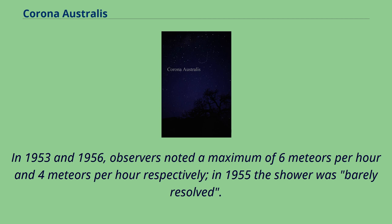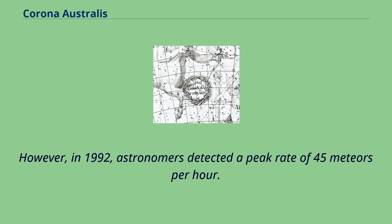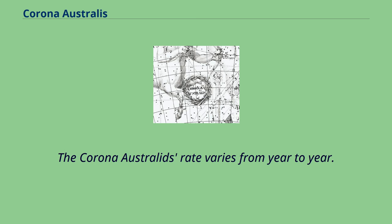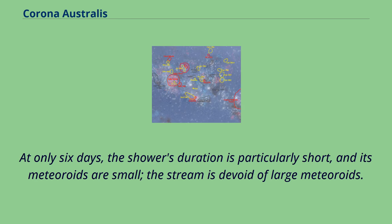In 1955 the shower was barely resolved. However, in 1992, astronomers detected a peak rate of 45 meteors per hour. The Corona Australids rate varies from year to year. At only 6 days, the shower's duration is particularly short, and its meteoroids are small — the stream is devoid of large meteoroids.